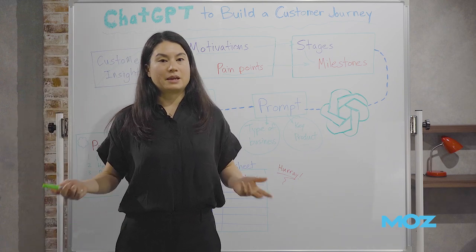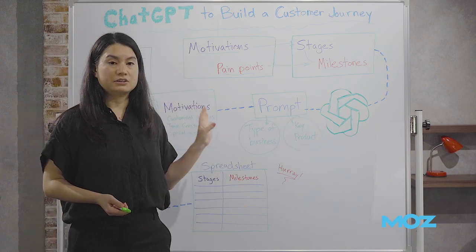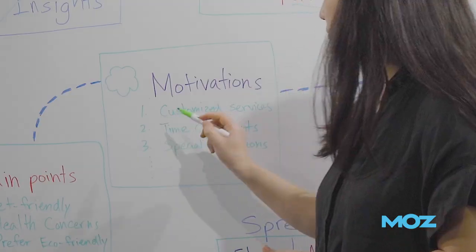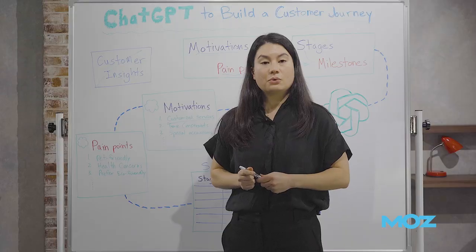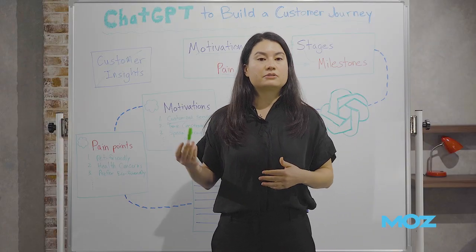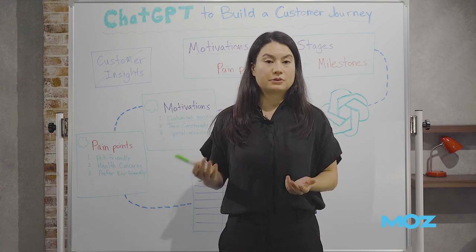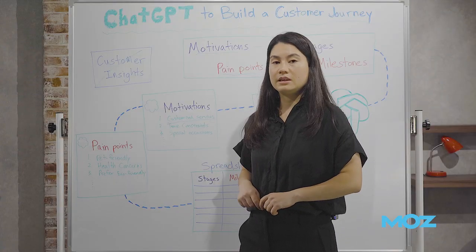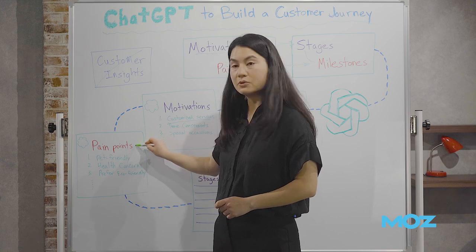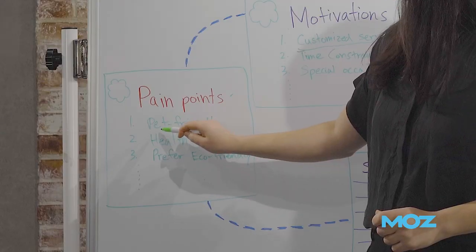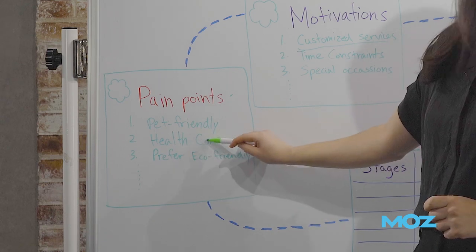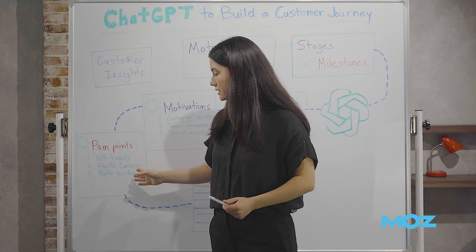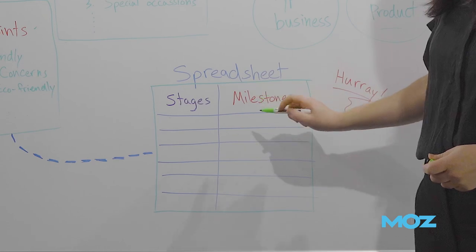Next, we'll ask about pain points for this specific user journey stage — think of it as a follow-up question. Let's choose customized services. We'll ask ChatGPT: I want to learn more about this specific motivation — what are the most common pain points for users? It will respond with a list of pain points, which includes pet-friendly services, health concerns, preference for eco-friendly services, and more. Copy and paste this list of pain points into your spreadsheet under milestones.